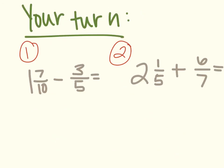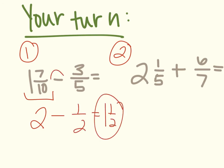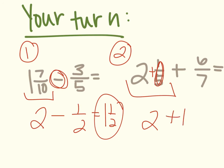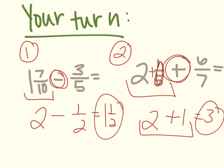Let's have you try these two problems. Go ahead and pause the video and answer these two questions, then check your answers. You should see that 1 and 7 tenths estimates to the whole number 2, because 1 plus 1 is 2. 3 fifths is closer to 1 half, so we get 1 and 1 half as our estimated difference. Then 2 and 1 fifth estimates to 2, because 1 fifth rounds to 0. 6 sevenths is close to 1, so 2 plus 1 gives us an estimated sum of 3.